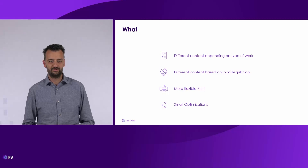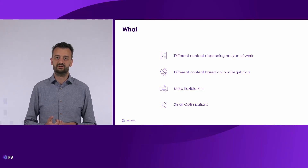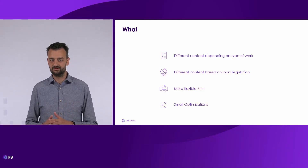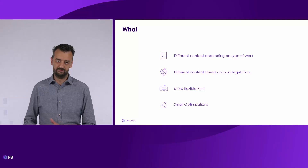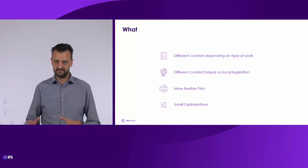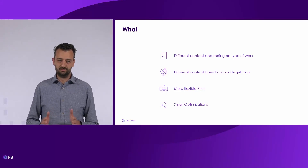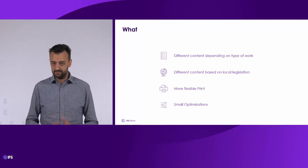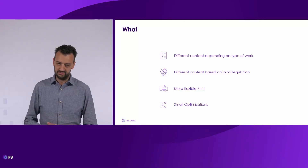Let's wrap up. We identified the different topics. We made the possibility to differentiate the content of your permit based on the type of work — you can create permit types, add symbols to them, and indicate on a selection list that it's type-specific so it's only added when that type of work is applicable. We created the possibility to differentiate based on local legislation, so you can create selection lists only applied for certain sites in certain countries. We made the permit print more flexible in different ways, and we also did some other small optimizations.